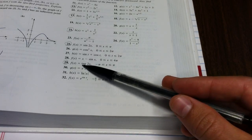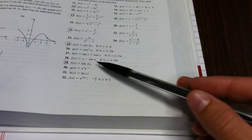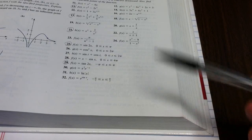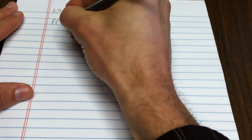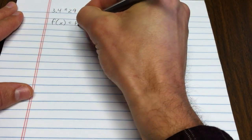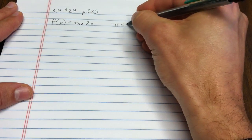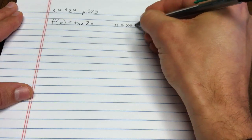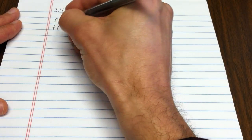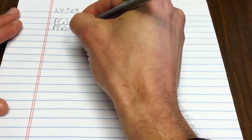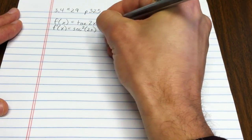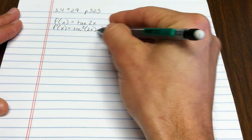So, we have f(x) equals tan 2x from negative pi to pi. I'm going to first off go about taking that second derivative to determine concavity. So the first derivative, using the chain rule, is the secant squared of 2x times the derivative of the inside, which is 2.